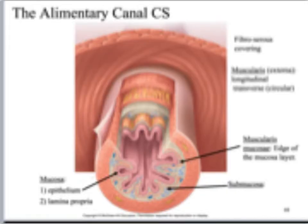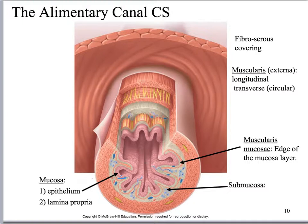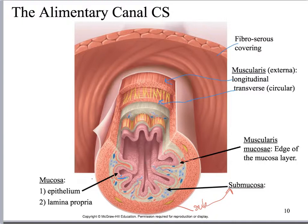This is a different view of the same structures. You can see the epithelium, then the lamina propria, then the muscularis mucosae, and then the submucosa. The muscularis externa shows the longitudinal fibers and the circular layer. The outermost layer would be the serosa, or if you're dealing with the esophagus, the adventitia. This actually looks like the esophagus because the epithelium here is stratified squamous.